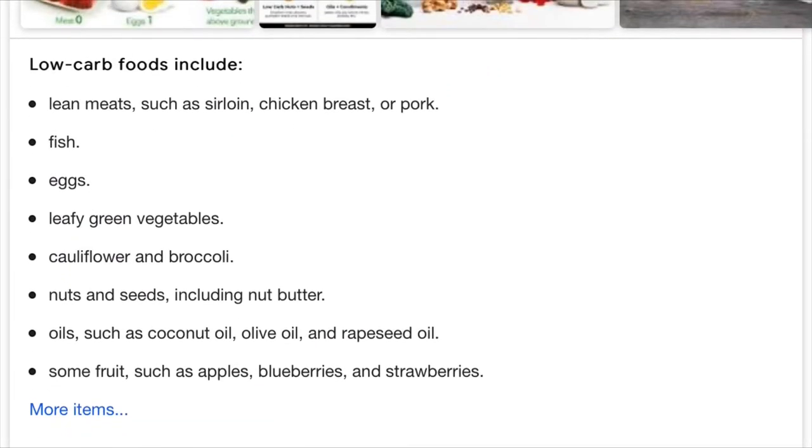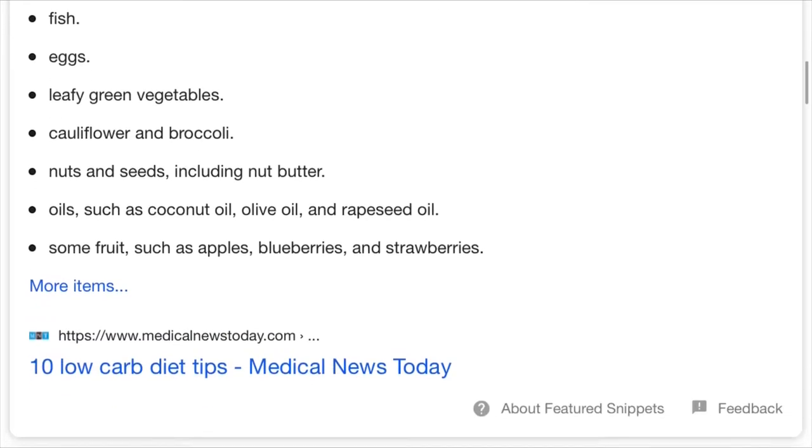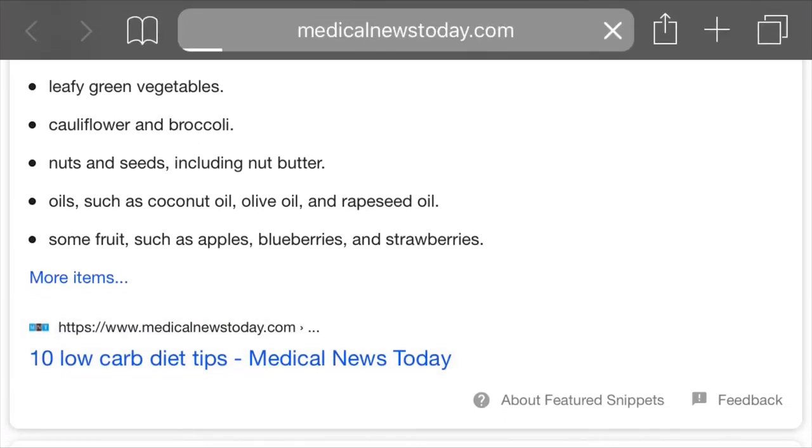And it would indicate that low-carb foods would include lean meats such as sirloin, chicken breast, or pork, fish, eggs, leafy green veggies, cauliflower and broccoli, nuts and seeds including nut butter, oils, and some fruit.